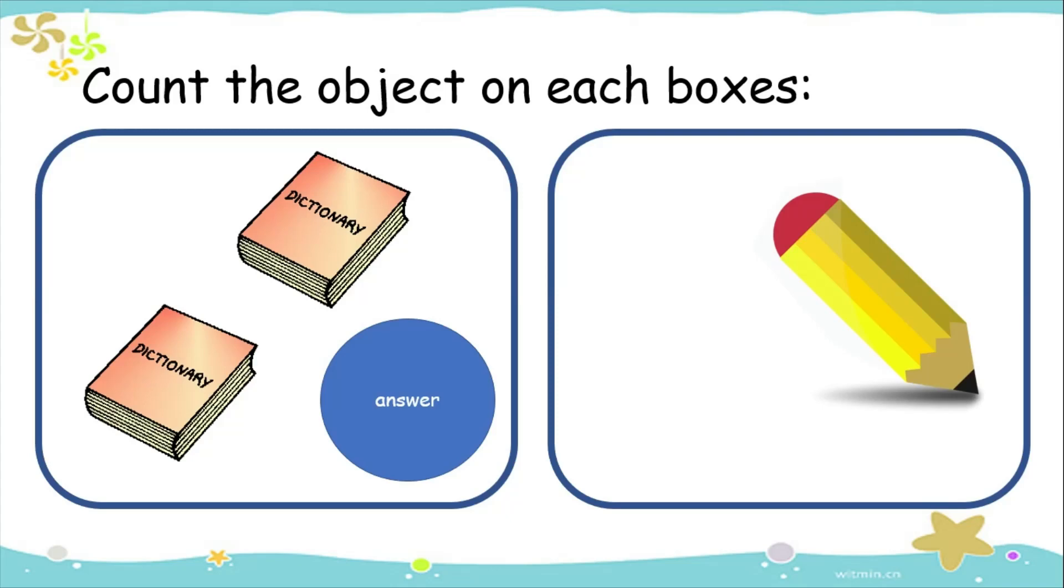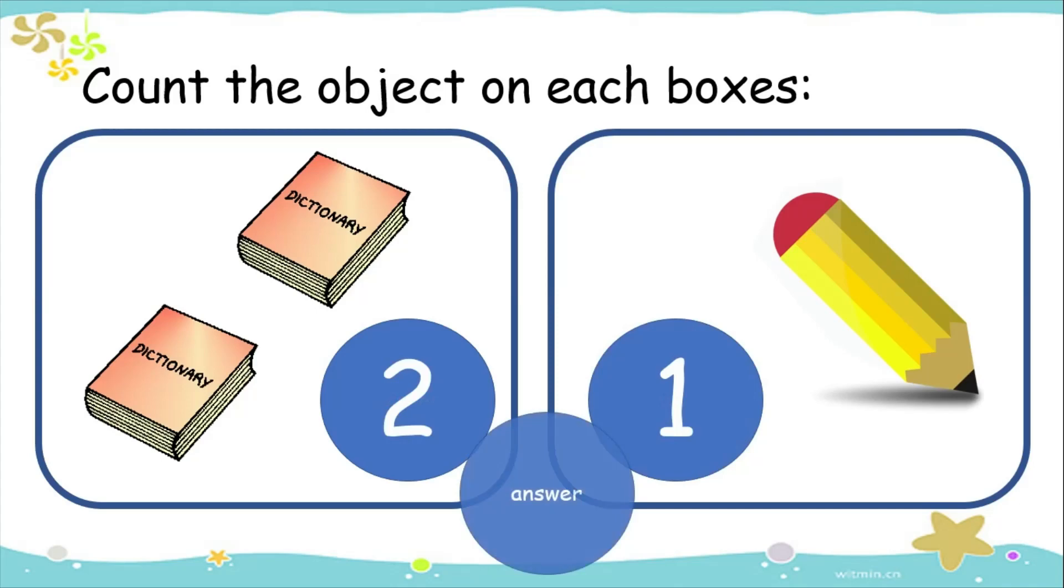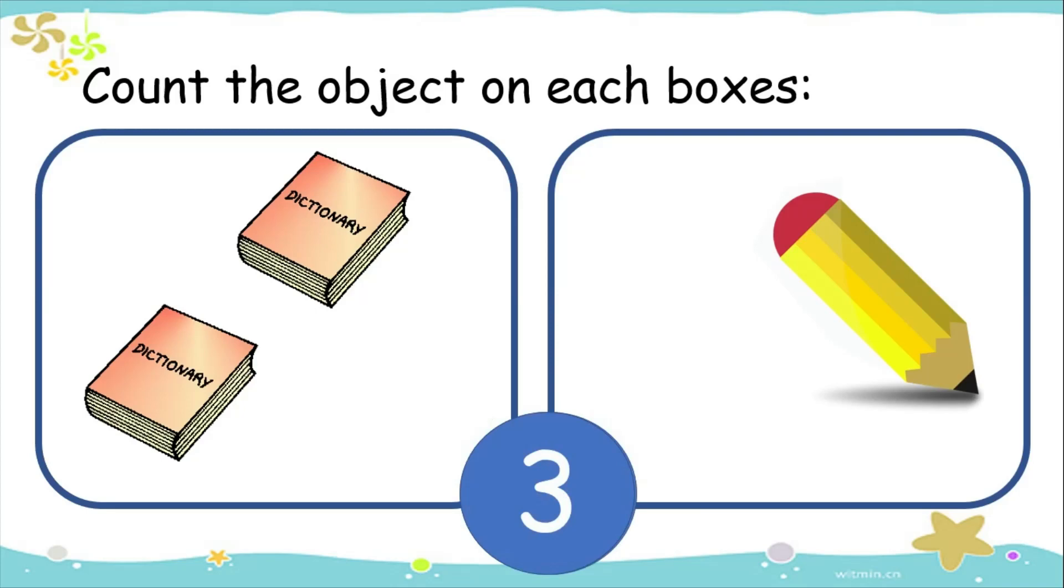How many books? Correct! Two. How many pencils? Good job! One. Two and one makes three. Three objects in all.